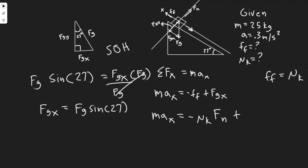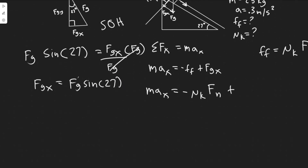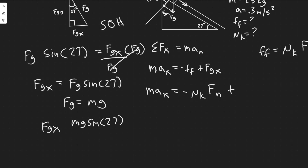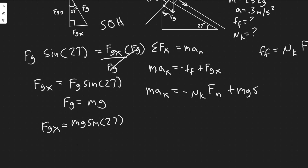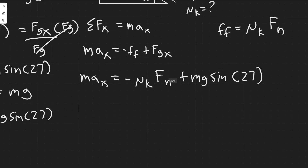So fg_x = mg × sin(27), since the force of gravity equals mass times g. Plugging this into our equation gives: ma_x = -mu_k × N + mg × sin(27). Now we just need the normal force N.